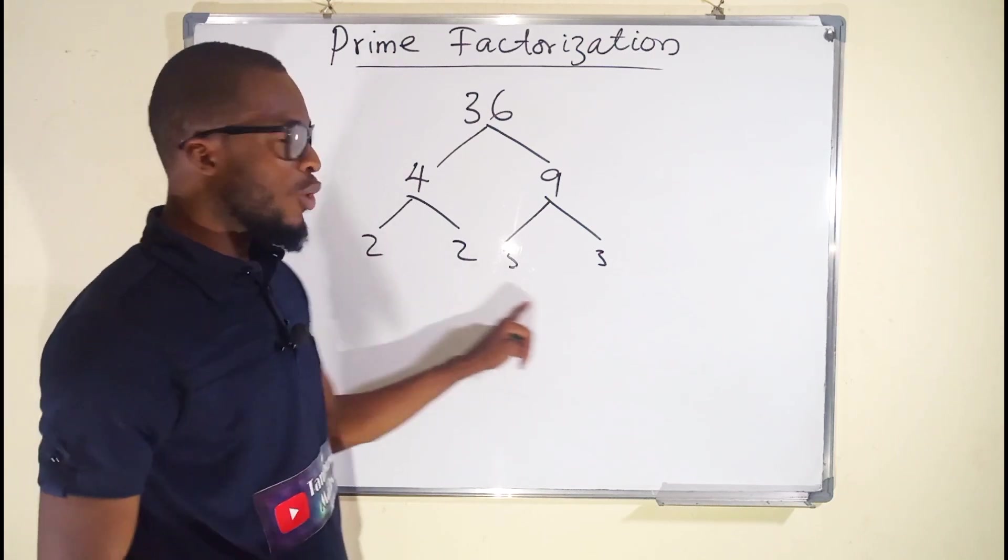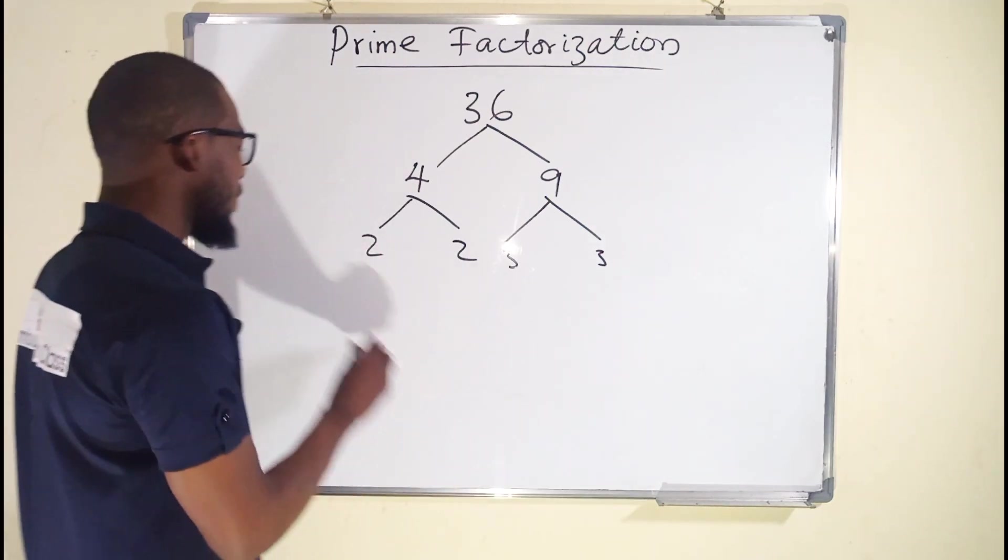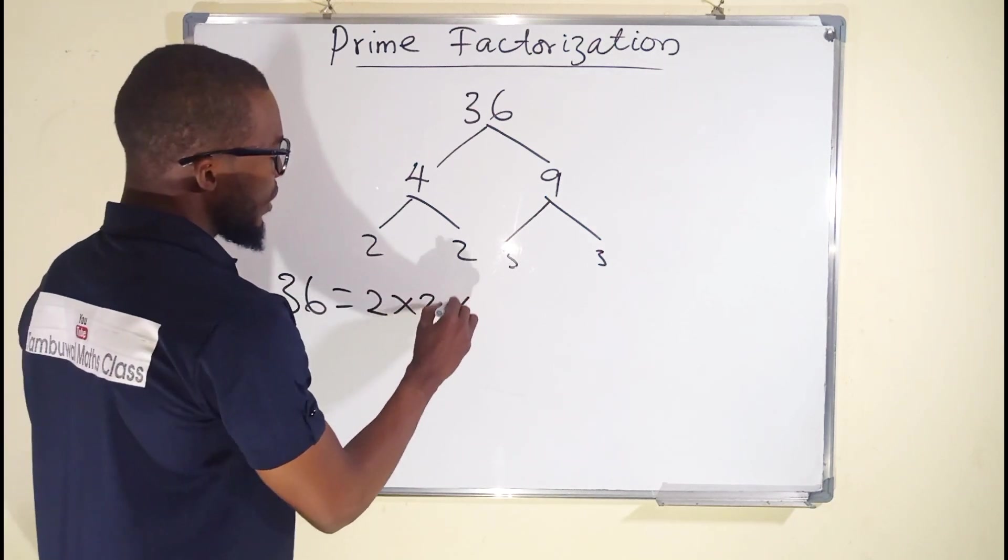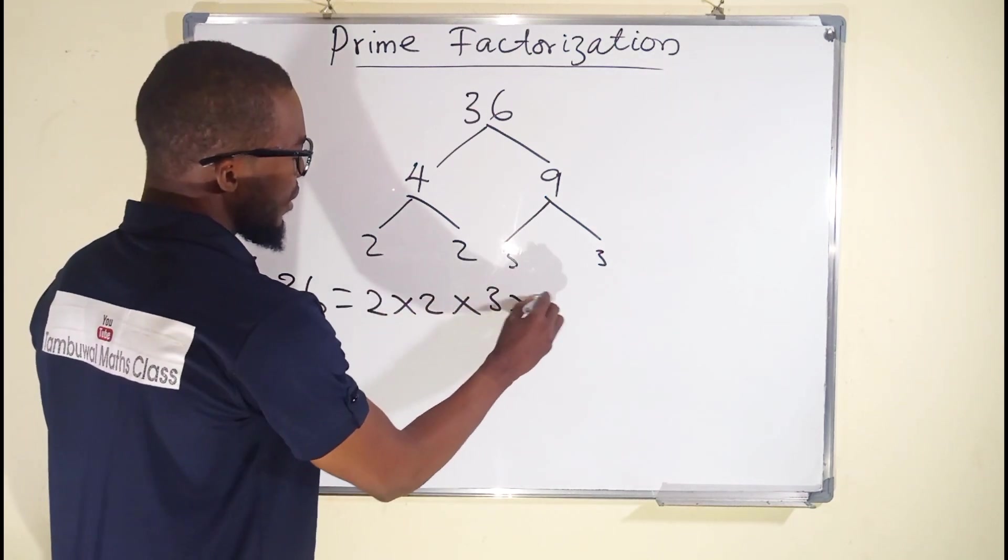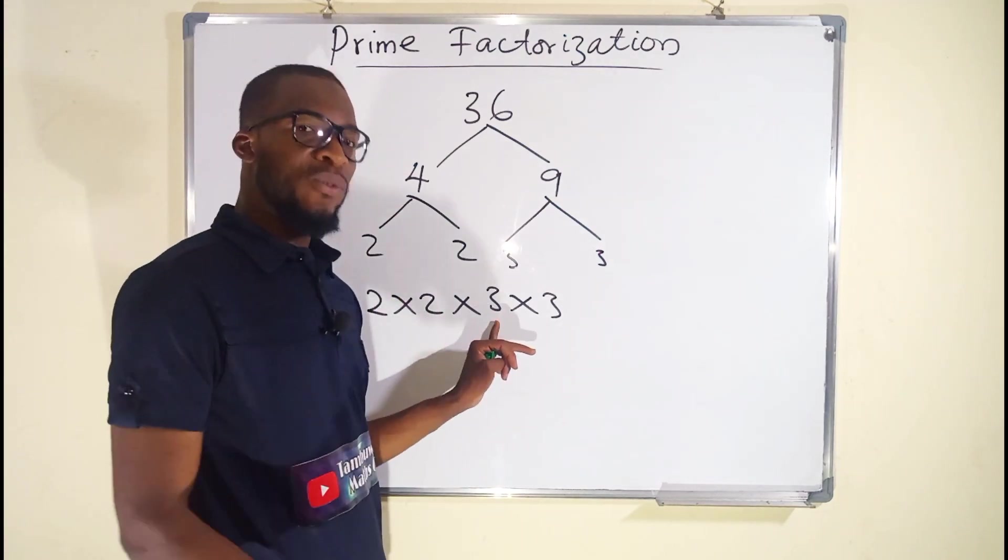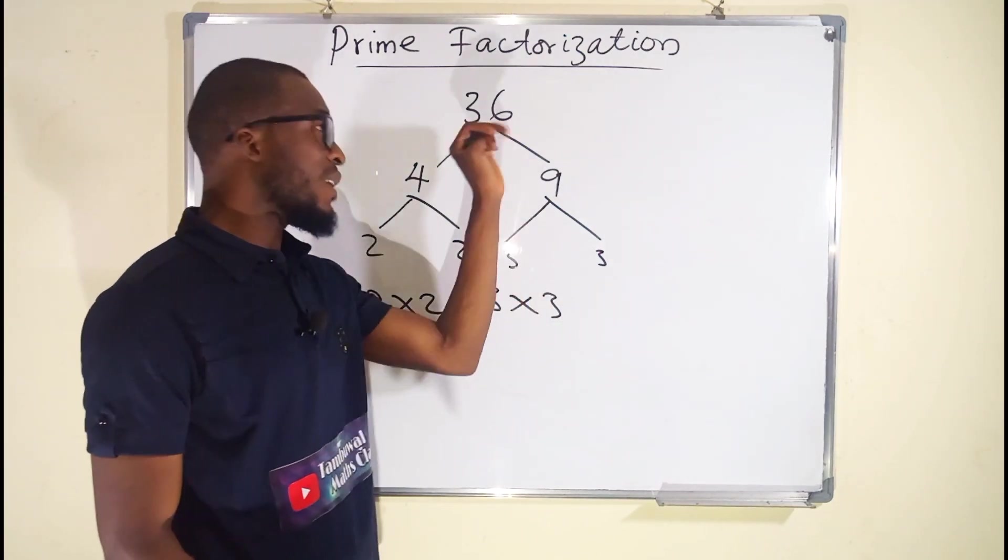So all the 4 numbers are now prime. So we stop and say 36 is equal to 2 times 2 times 3 times 3. 2 times 2 is 4, 4 times 3 is 12, 12 times 3 is 36.